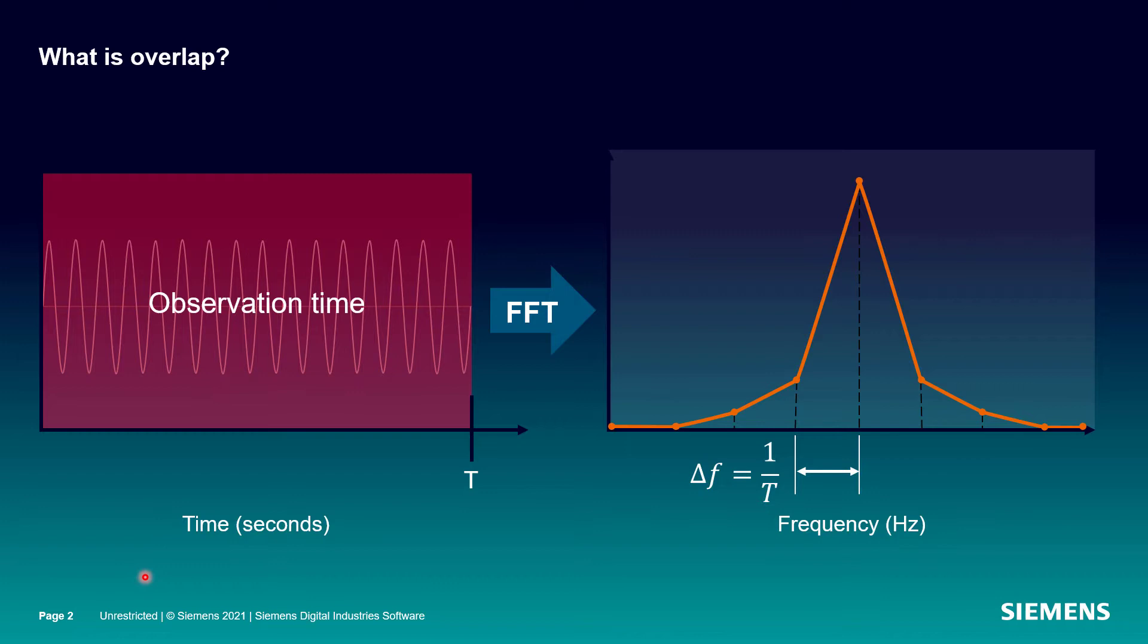So what is overlap? When we take some time data and bring it into the frequency domain using the Fourier transform, we're always using some observation time or chunk of time data that we denote with this capital T.